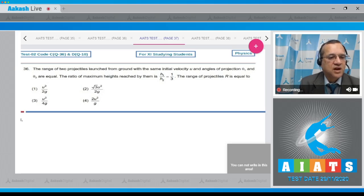Question number 36: The range of two projectiles launched from the ground with the same initial speed u and angle of projection theta 1 and theta 2 are equal. The ratio of the maximum height reached by them is h1 by h2 equal to 1 by 3.